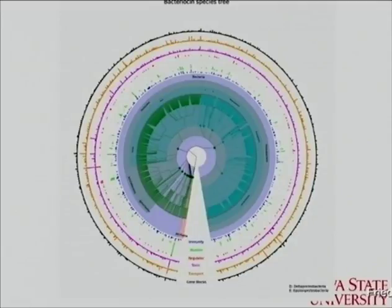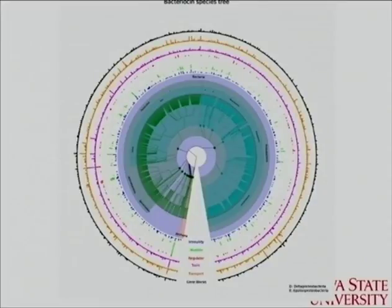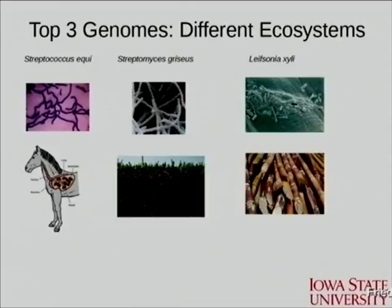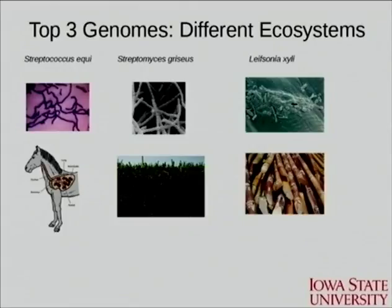We scanned all of GenBank for finding bacteriocins and find them basically in all bacterial phyla. Some phyla have more, but that may be a result of people looking at those phyla more than others — for example, the Firmicutes where you find streptococci, which are of strong interest to pharma. Interestingly, the top three genomes where we find the most bacteriocins come from completely different ecosystems: Streptococcus equi, which infects the lungs of horses; Streptomyces griseus, which is a soil bacterium; and Leifsonia, which is a sugar cane pathogen. They produce bacteriocins from completely different ecosystems, and we think there are a wide spectrum of indications as to what they do.